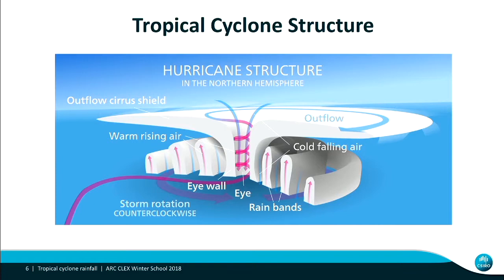Here is a cartoon, courtesy of Wikipedia, showing the basic structure of a tropical cyclone or hurricane in the northern hemisphere. This is a very mature storm. We have the eye wall with rapidly ascending air, and then this large area of cloud canopy covering most of the storm. From satellite, mostly what you're seeing is this outflow region. We've got these rain bands that circle the storm.